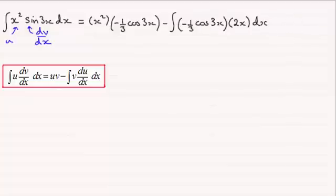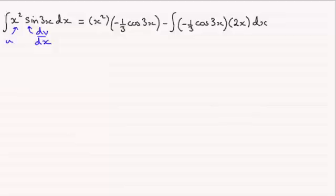Okay, so that's essentially that. We'll just get rid of the formula now. And we just need to tidy this up. So x squared times minus 1 third, that will look better as minus x squared divided by 3, and then multiplied by the cosine of 3x.